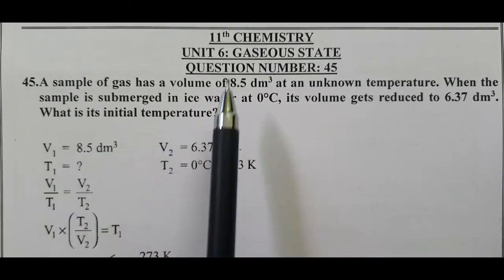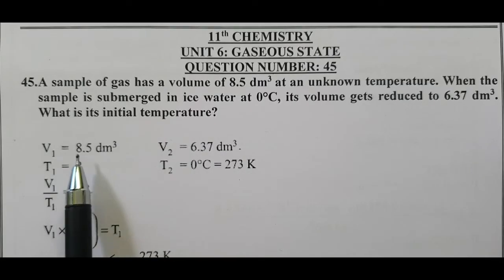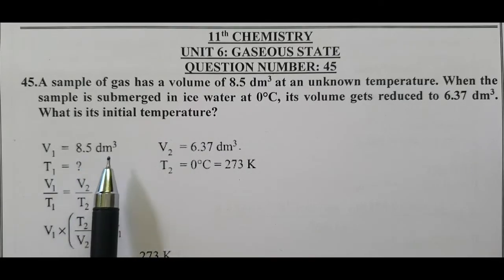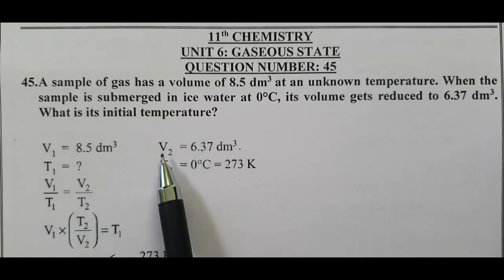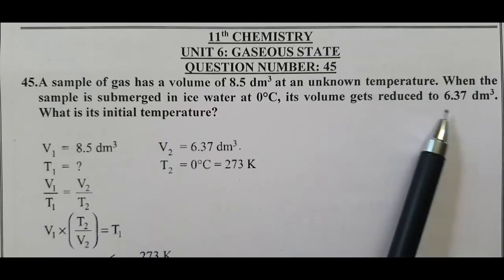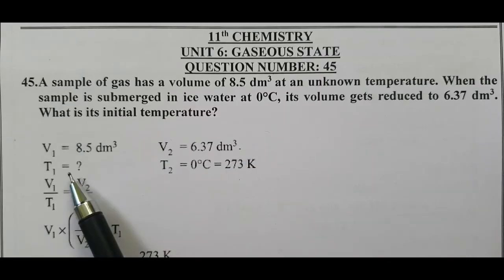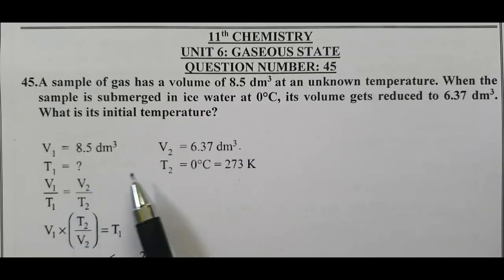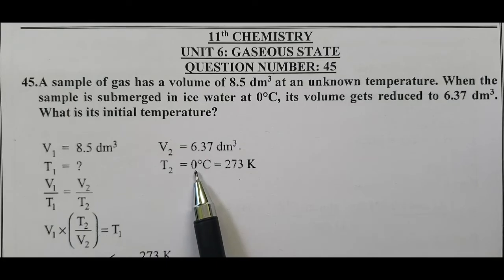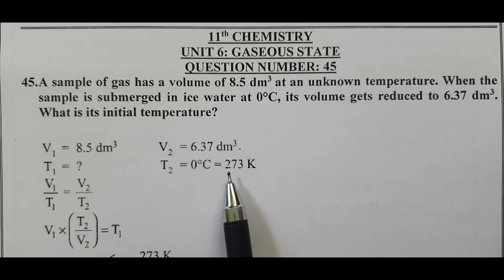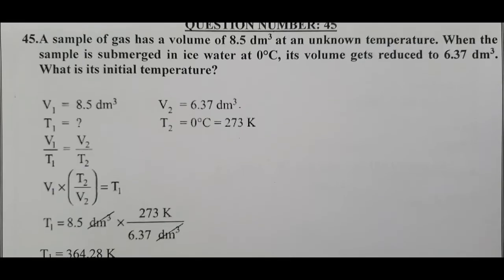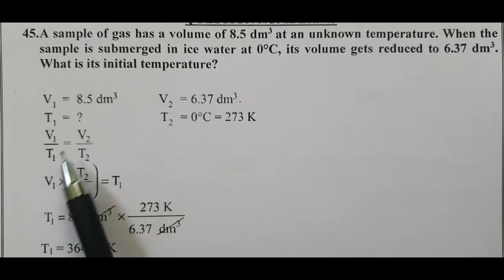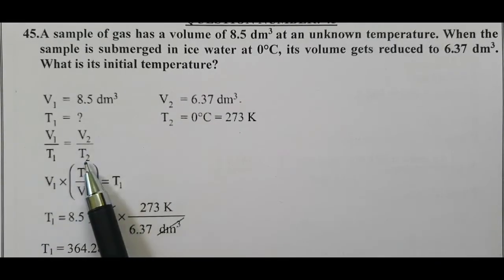Volume V1 is given as 8.5 decimetre cube and V2 is 6.37 decimetre cube. We have to calculate T1. T2 is 0 degree Celsius plus 273, equal to 273 Kelvin. According to Charles' Law, V1 by T1 equal to V2 by T2.